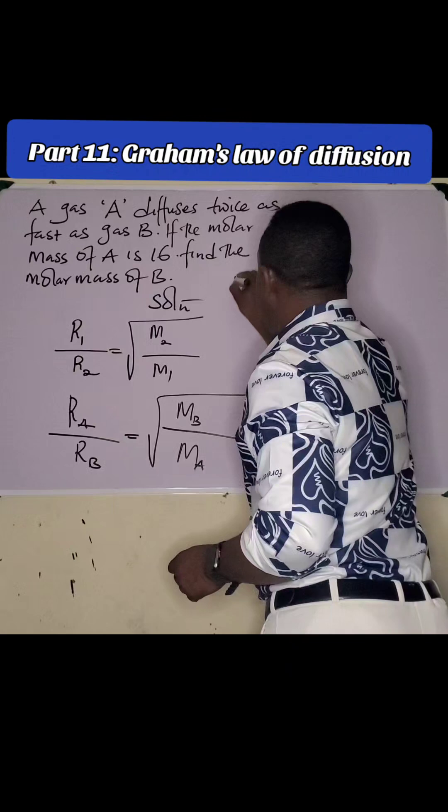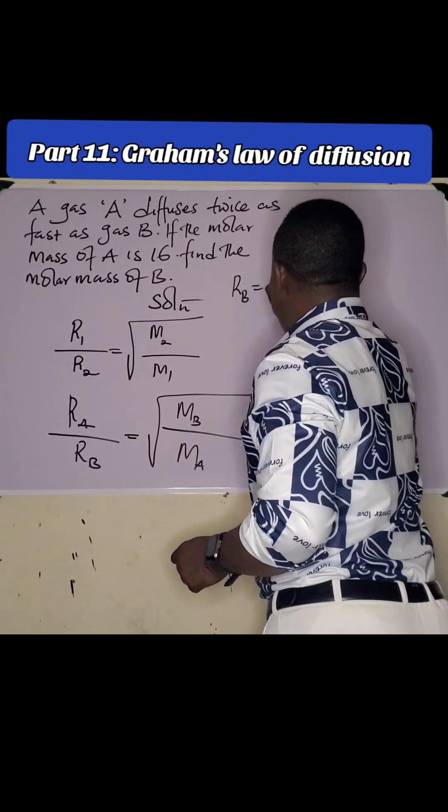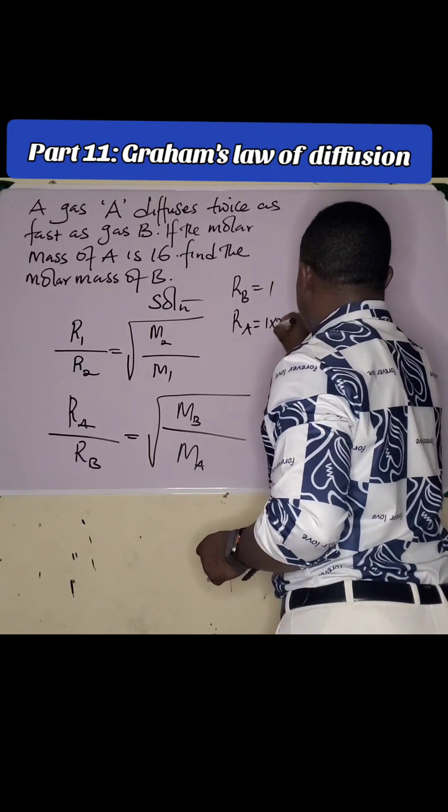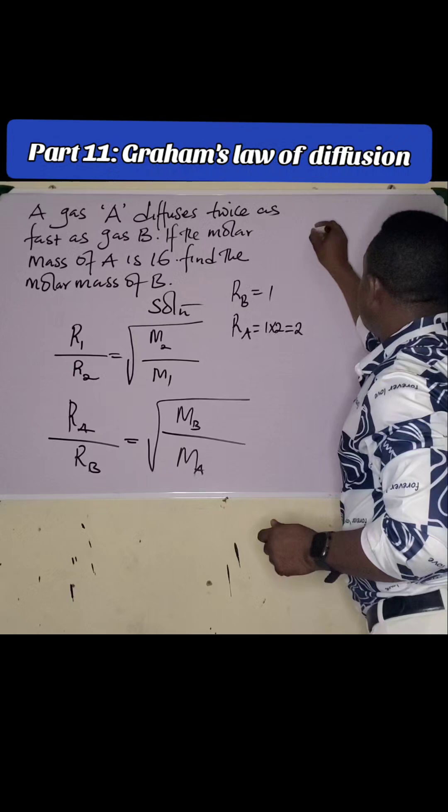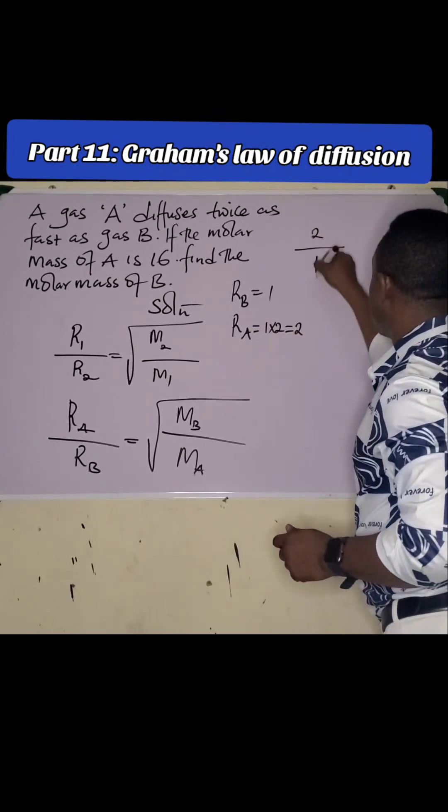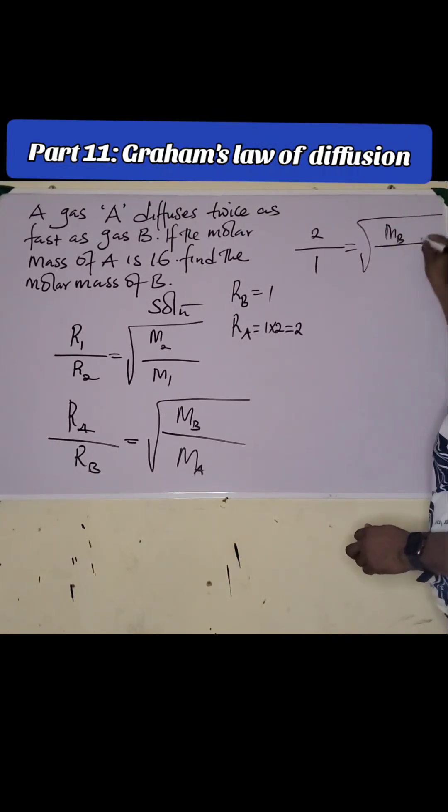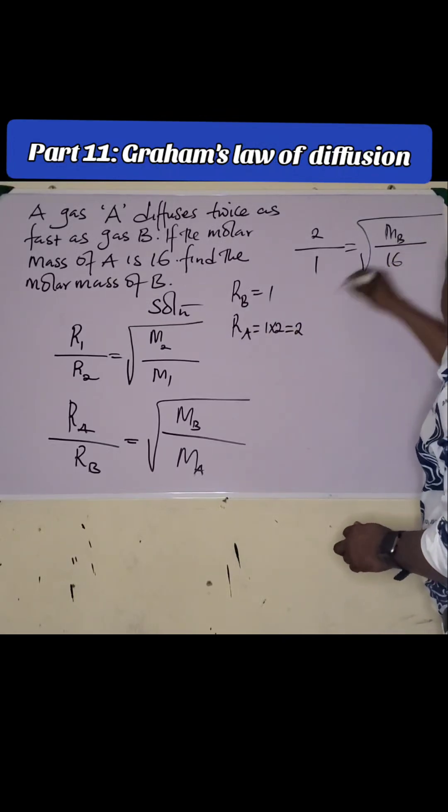We say that if the rate of B is equal to 1, then the rate of A is equal to 1 times 2, which is equal to 2. So 2, while the rate of B is 1, which is equal to square root of the molar mass of B, which is not given, over that of A, which is given as 16.